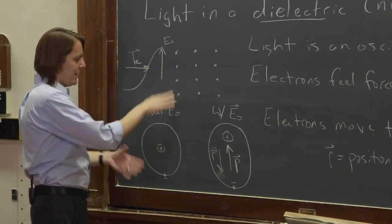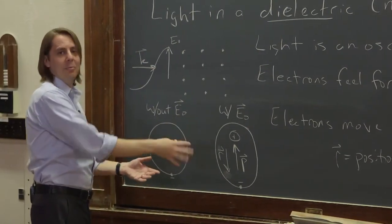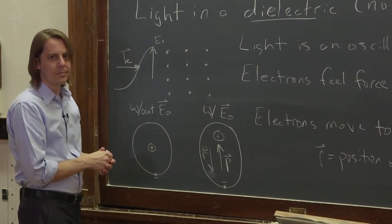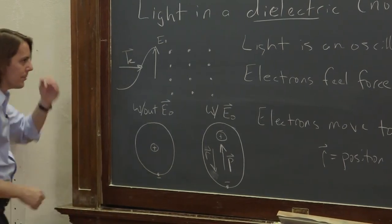Now, if light comes by, this dipole moment is not static. This dipole moment is going to oscillate. So now we need to calculate or come up with an expression for that oscillation. This dipole moment is not static.